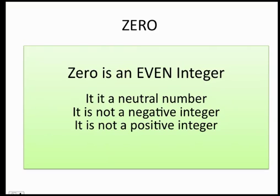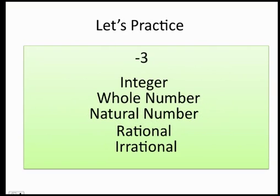Let's practice. The number negative 3: is it an integer? Yes. Is it a whole number? No, because whole numbers have to be positive — integers include zero and positives. Is it a natural number? No, because it's negative. Is it a rational number? Yes, because 9 over 3 is the same as negative 3.